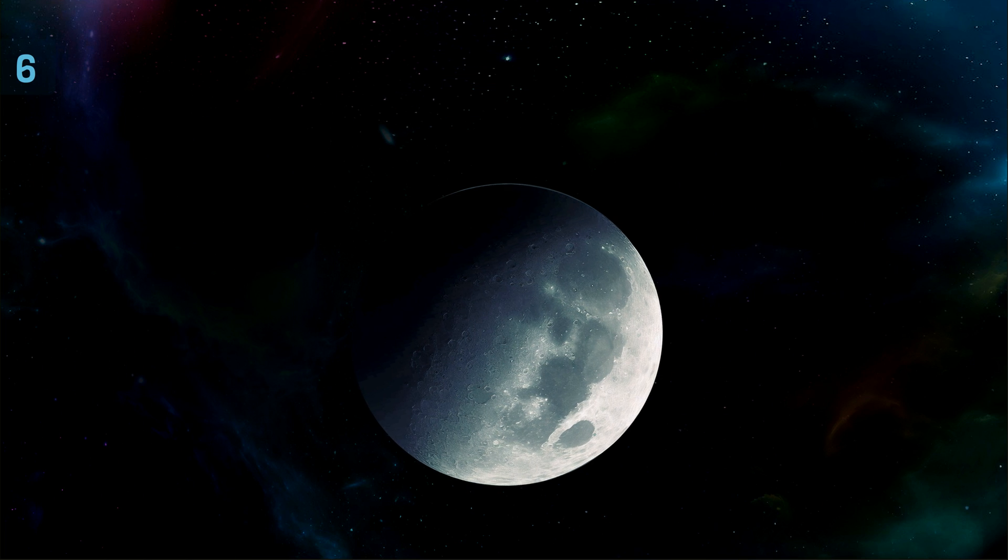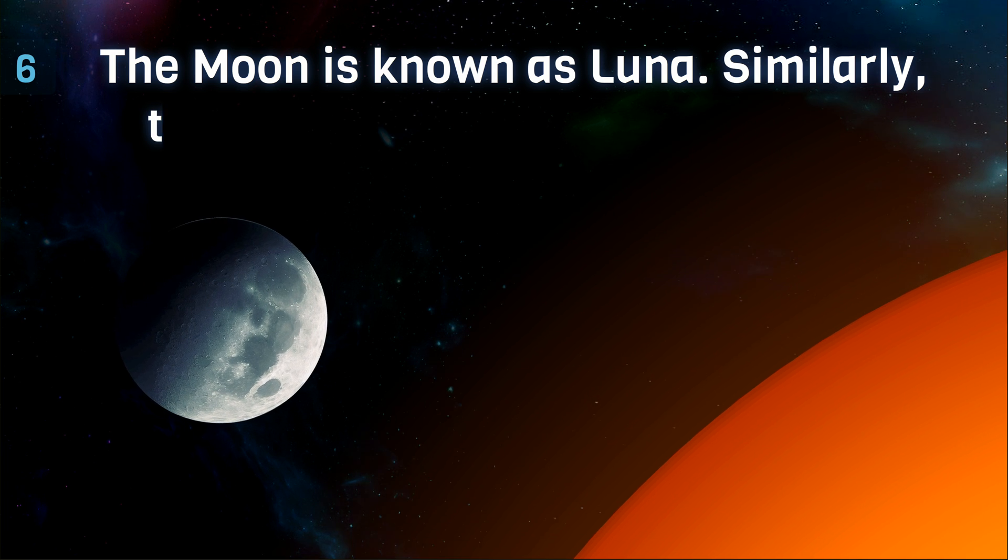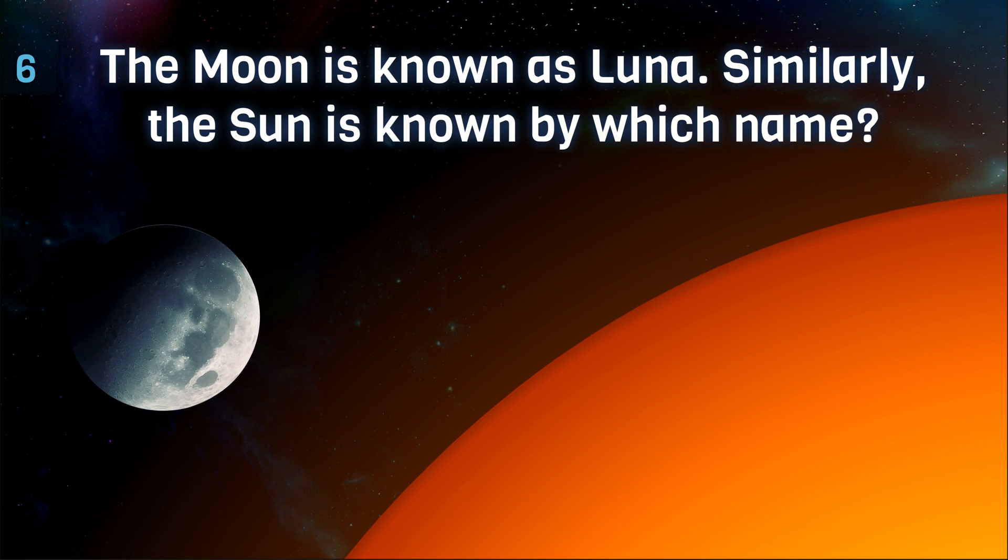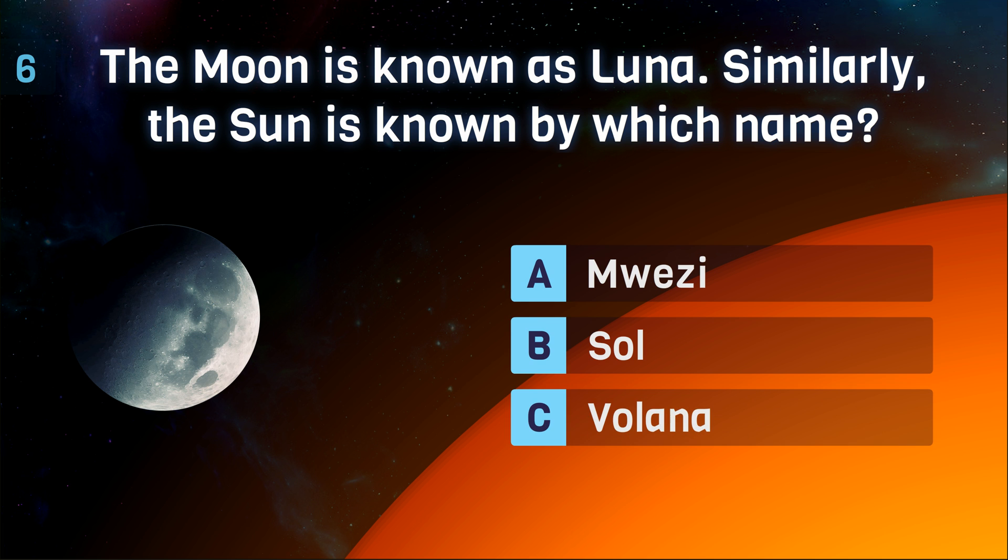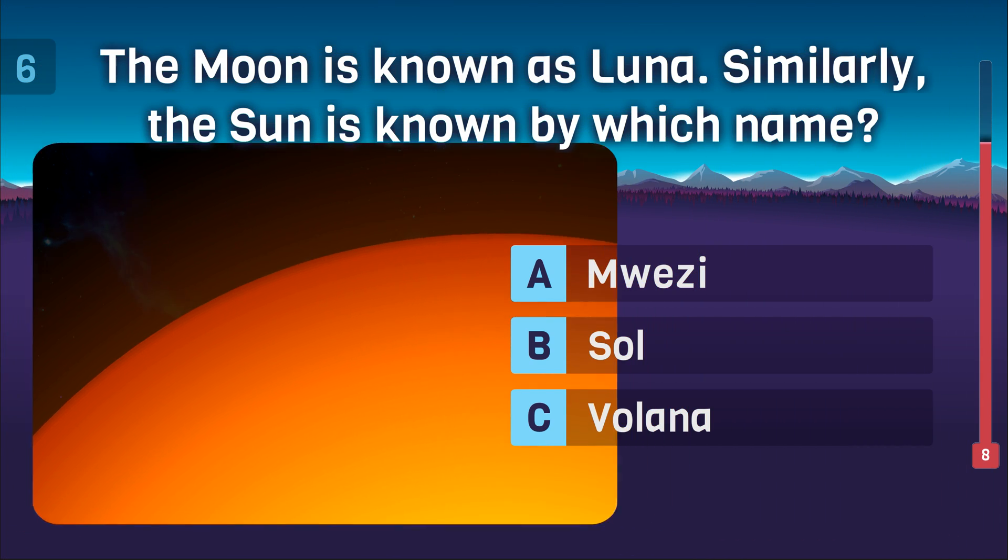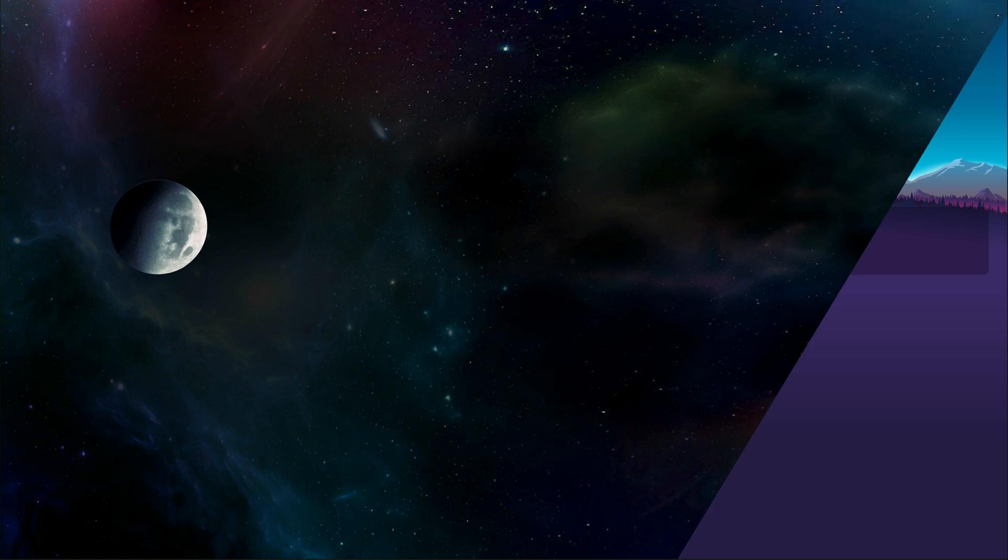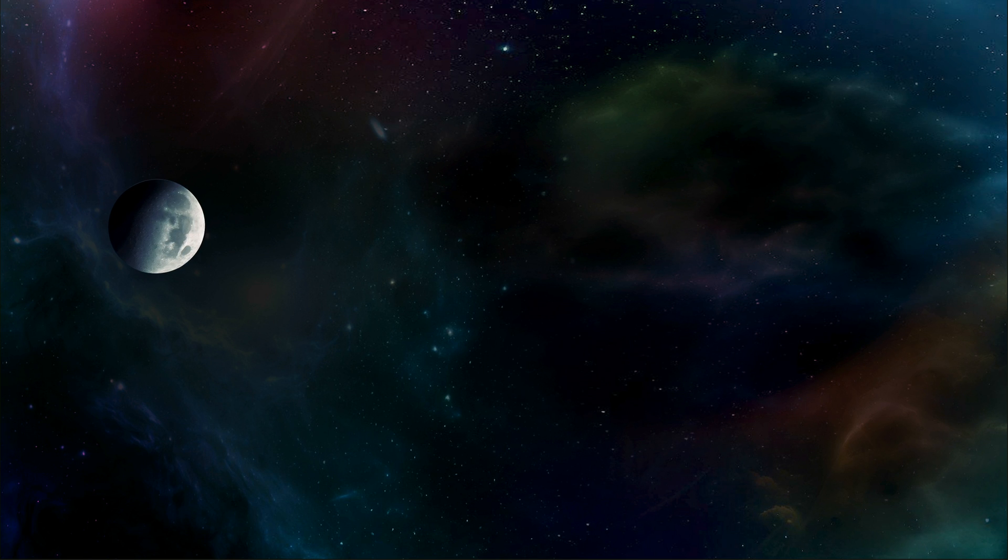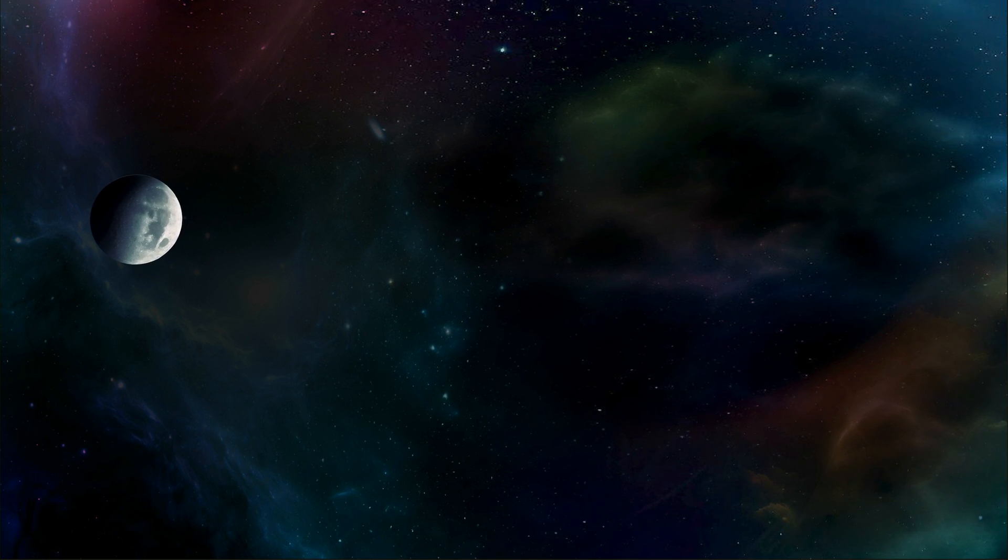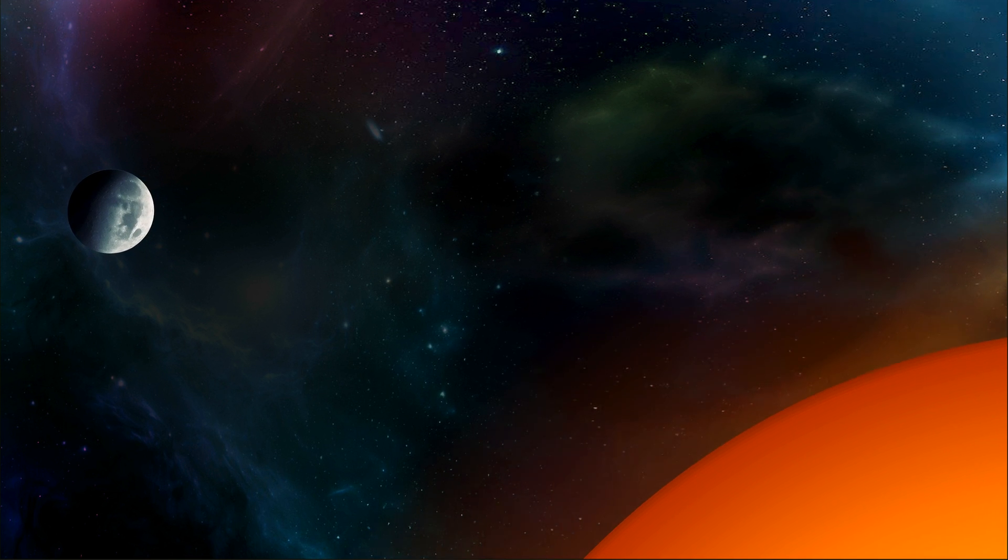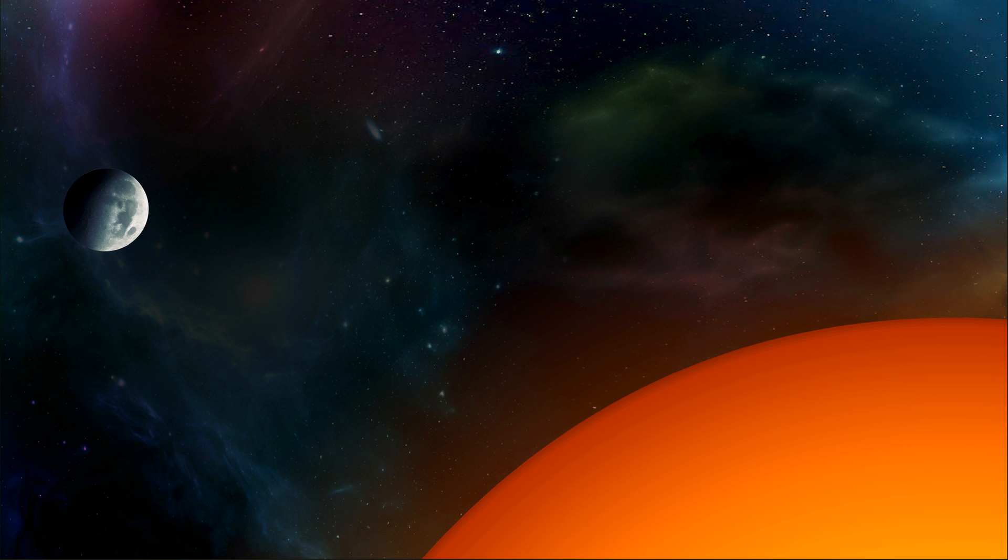Next question. The moon is known as Luna. Similarly, the sun is known by which name? Sol or Volana? It's Sol. The moon is called Luna, which is the Latin word, and the main adjective for moon-related things is lunar. Similarly, the adjective for all things related to the Sun is solar, and the name for the Sun is Sol.